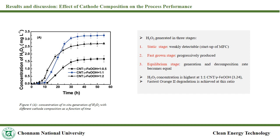Figure 4A shows hydrogen peroxide concentration with different cathode compositions. It was generated in three stages: static stage, progressive stage, and equilibrium stage. The concentration of hydrogen peroxide at a carbon nanotubes and lepidocrosite weight ratio of 1:1 was maximum; hence, the fastest orange 2 degradations were achieved.